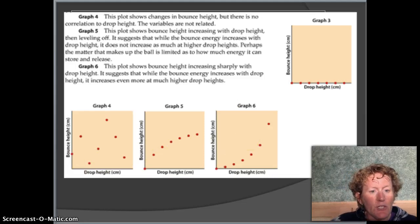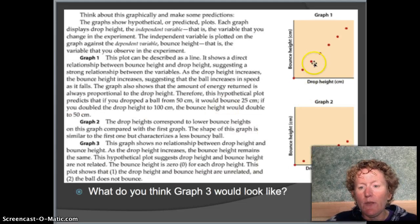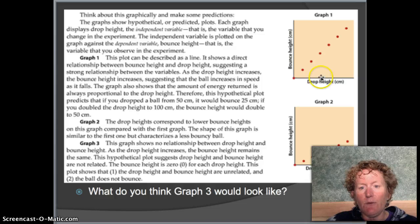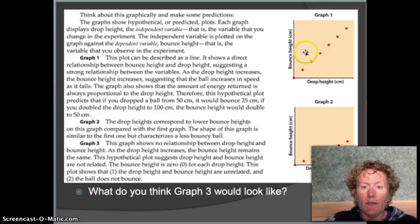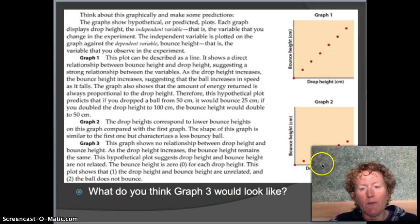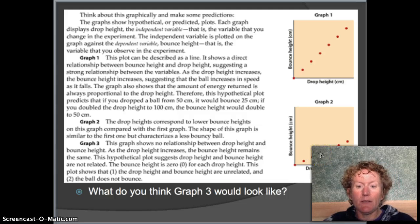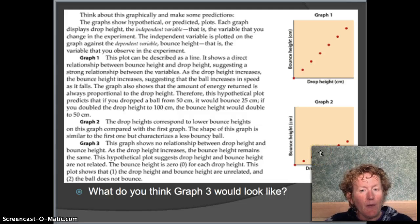These different graphs have different shapes that show the relationship between the drop height and the bounce height. For instance, this graph shows that if you drop a ball from 40 or 50 centimeters, it's going to bounce to about the same height. This graph says drop height and bounce height are the same, whereas if we look at this graph, the drop height is bigger than the bounce height. The drop height is over here, and the bounce height is about right here for this point, at about 60 centimeters.